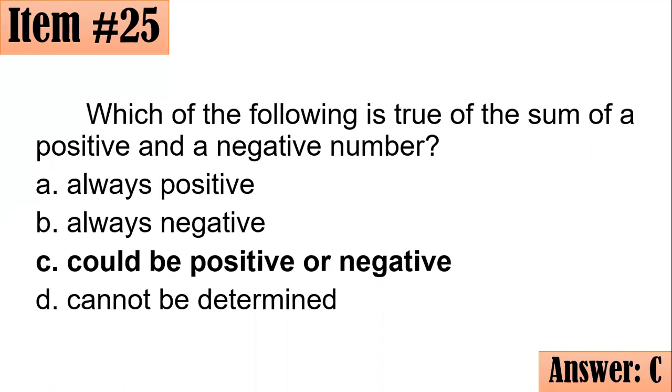How come letter C? Because the sign of the number could be positive or negative. It actually depends on the absolute values of the numbers involved and also depends on the signs.